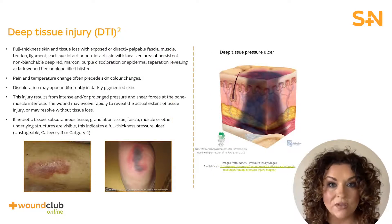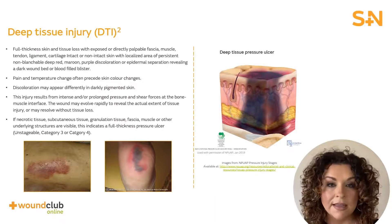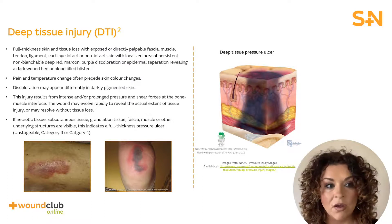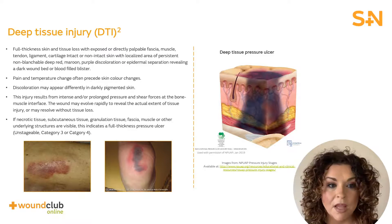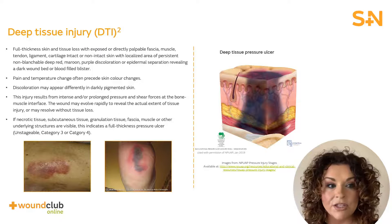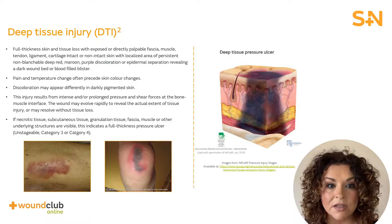Deep tissue injury or DTI is a term used to describe a unique form of pressure ulcers. These ulcers have been described by clinicians for many years with terms such as purple pressure ulcers, ulcers that are likely to deteriorate and bruises on bony prominences. By definition, they are a pressure-related injury to subcutaneous tissues under intact skin. Initially, these injuries have the appearance of a deep bruise. They may lead to the development of a category 3 or 4 pressure ulcer.